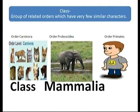Class is a group of related orders with similar characters. For example, the orders Carnivora, Proboscidea (elephant), and Primates all have something in common — they are all mammals. They give birth to young ones and feed them. So they are placed in the common class Mammalia.